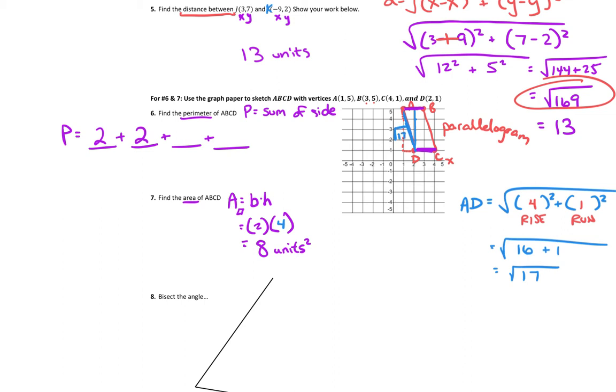Now the cool thing about a parallelogram is the other side is exactly the same. So side BC is also square root of 17. So my perimeter is going to be two plus two plus square root of 17 plus square root of 17. And we can simplify that because two plus two is four. And square root of 17 plus another square root of 17 is two square roots of 17. So that's the best answer for the perimeter. For our perimeter, we've got four plus two square roots of 17. For our area, we've got eight square units. For number five, we said the distance was 13 units.